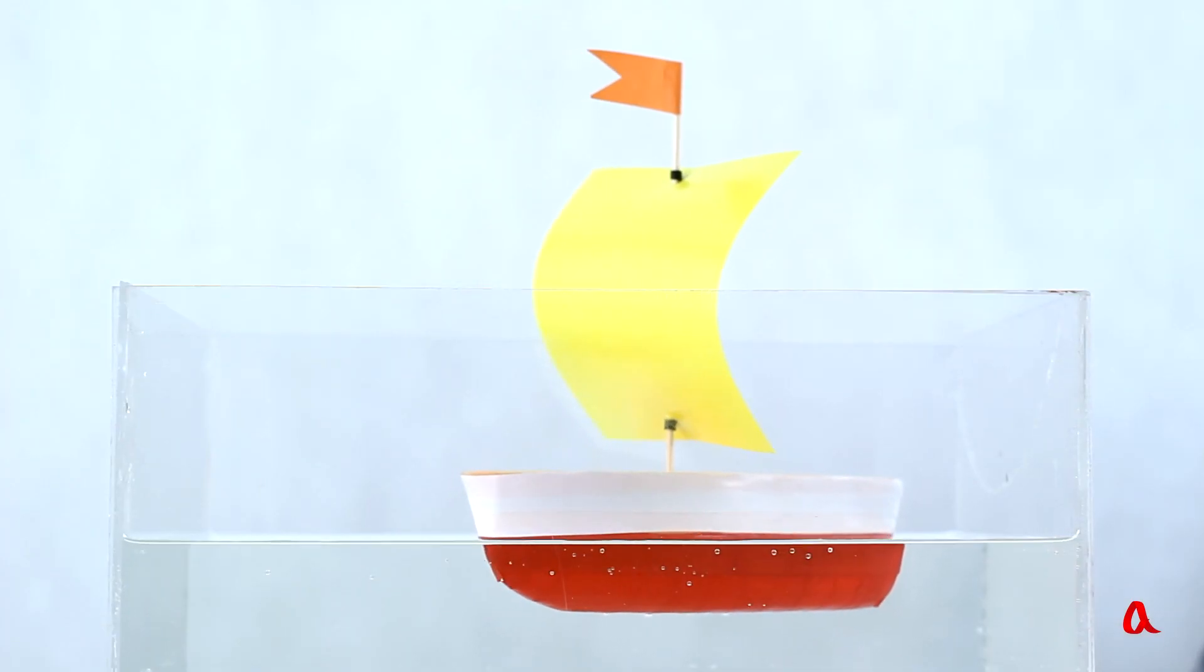How much do the bodies submerge if their density is smaller than that of water and if they float on its surface? Look at this boat with all of its red part being underwater. Why has it sunk to this particular depth?